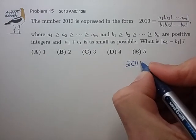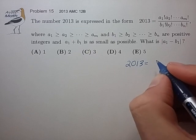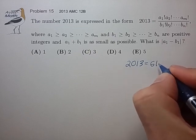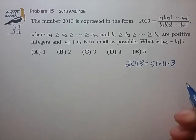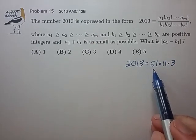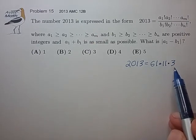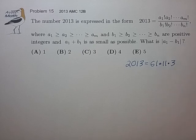So assuming we came equipped with that number, we know that 2013 is 61 times 11 times 3. So we're going to have to introduce the factors of 61, 11, and 3 through this ratio expression. So how can we do that?